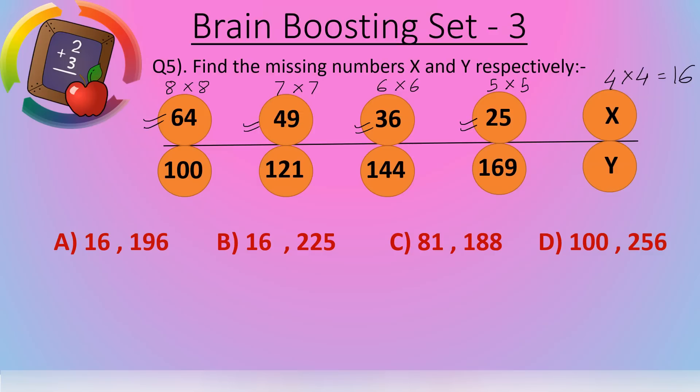And here 100, how we get 100? Yes, 10 into 10 we get 100. 121? 11 into 11 we get 121. And 144, if we multiply 12 into 12 we get 144. Because 12 into 10 is 120, and 12 into 2 is 24. 120 plus 24 equals 144. And here our pattern is 10, after that 11, after that 12. And 169, how we can get 169? 13 into 13.